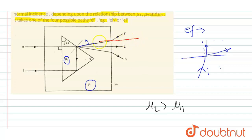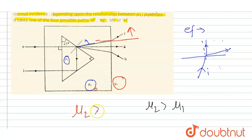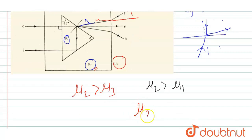Now drawing a normal at the second interface point, the ray tends to bend away from the normal. This means the ray is going from a denser medium to a rarer medium, so μ2 is greater than μ3. Therefore, for path EF: μ2 > μ1 and μ2 > μ3. We cannot comment on the relation between μ1 and μ3.